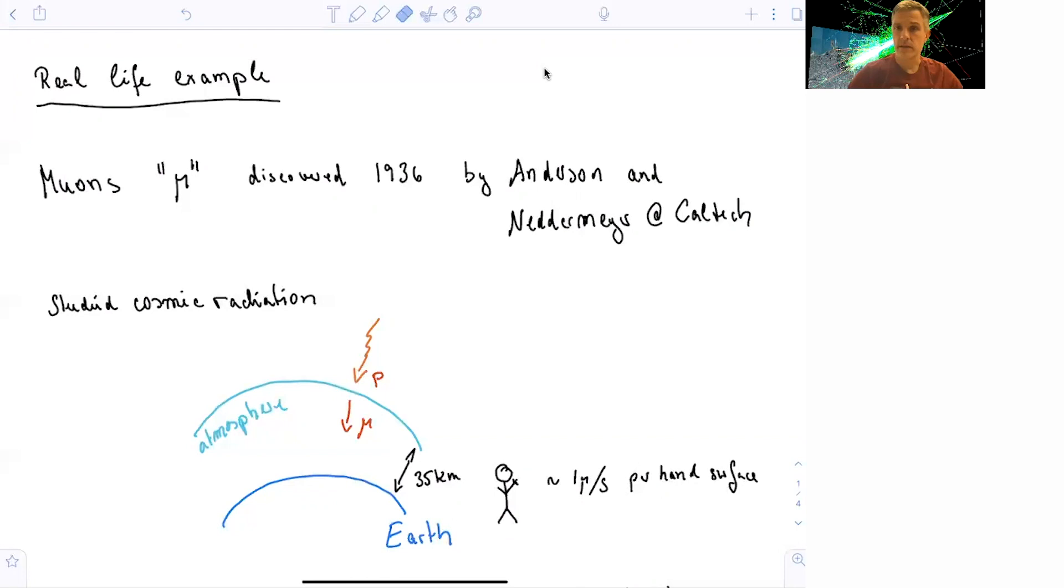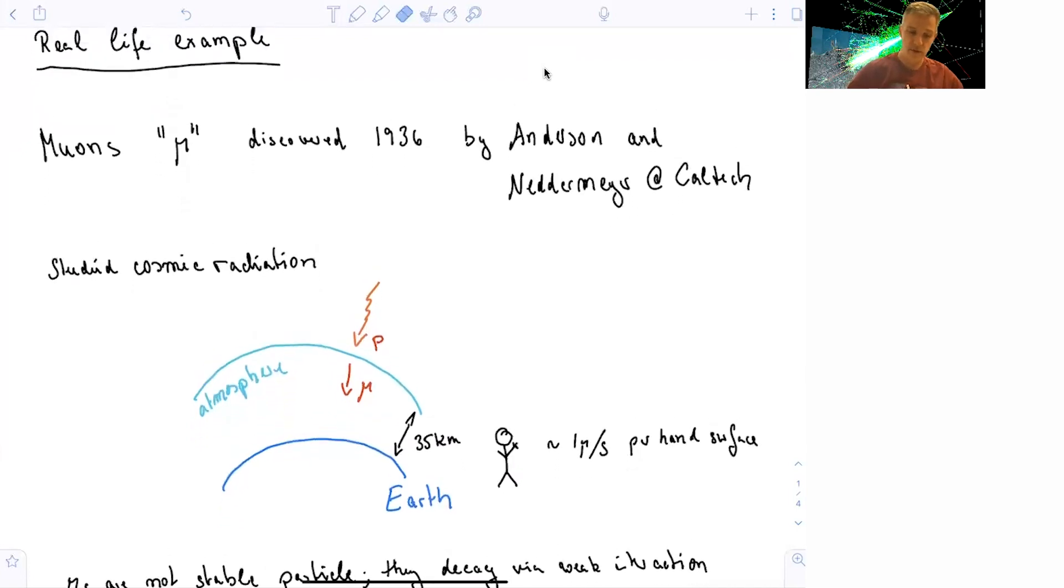It's really one of my favorite particles because they're abundant. There's many of them in cosmic air showers. You can study them, you can study their lifetime, you can even calculate their lifetime on a piece of paper. So what Anderson and Niedermeyer did is they basically went outside and discovered a particle which comes from the sky, and so they studied cosmic radiation.